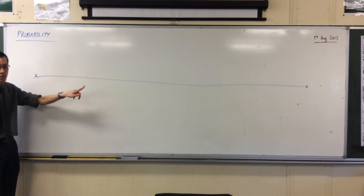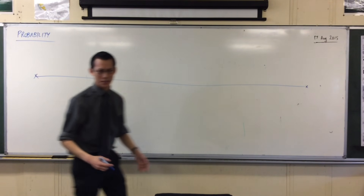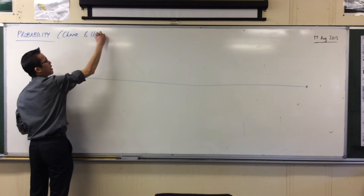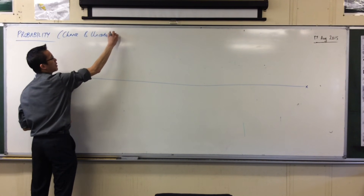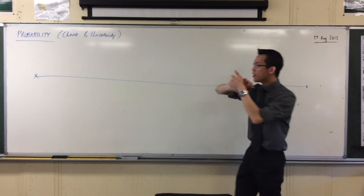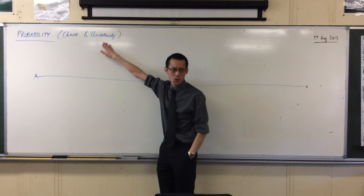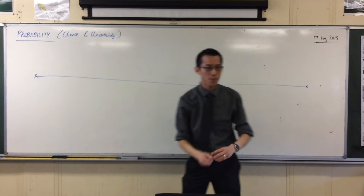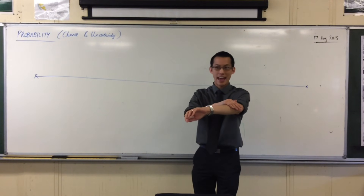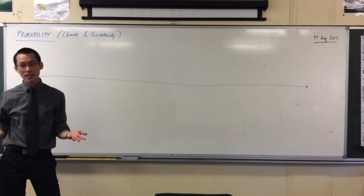So this is a spectrum — and what this spectrum is about is a spectrum of probability, or if you prefer, chance and uncertainty. I think these are really important words. The whole idea is something might happen but you don't really know. For example, when I take this coin and flip it, some of you called heads and some called tails — you were uncertain.